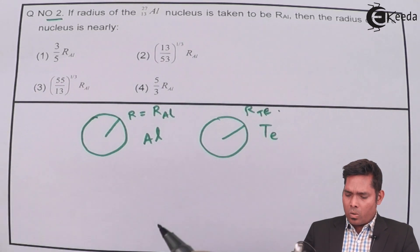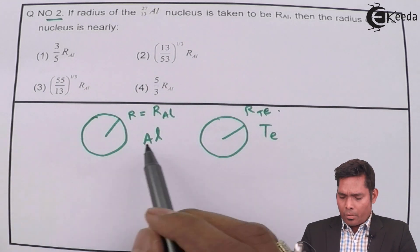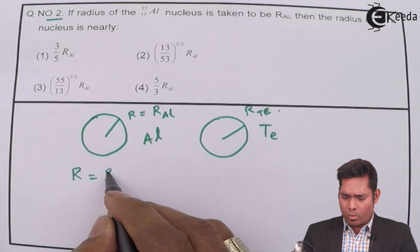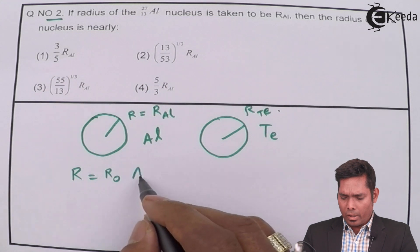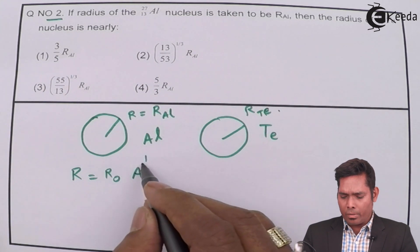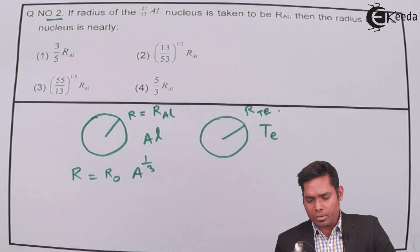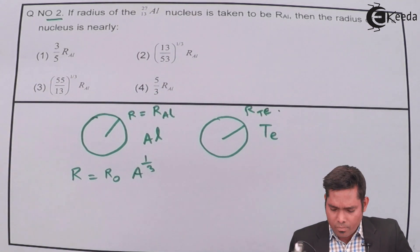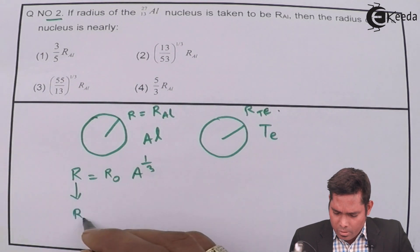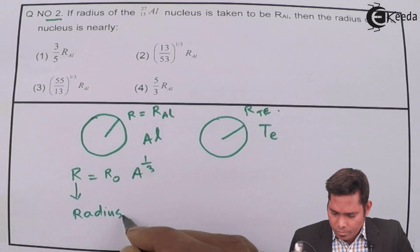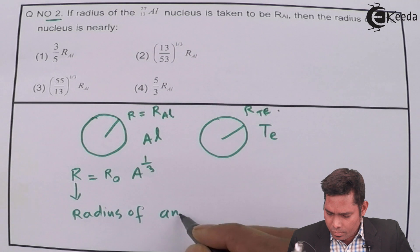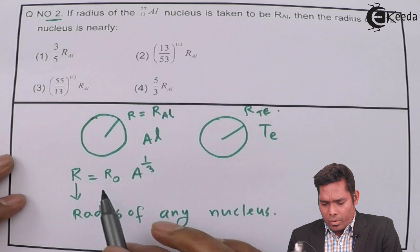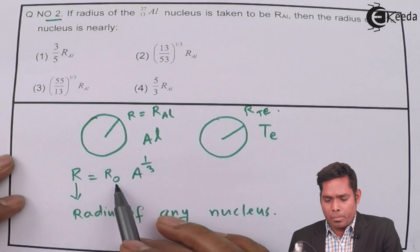Now, we know that the radius of any nucleus is given by some constant value R₀ times mass number to the power 1 by 3. This is the formula that we are going to use. This is a very well known formula to find the radius of any nucleus. R₀ is a constant and that is in femtometer. It is around 1.2 femtometer.